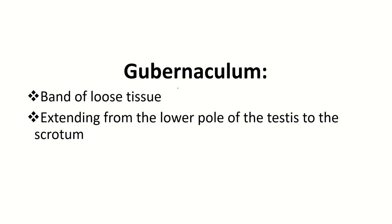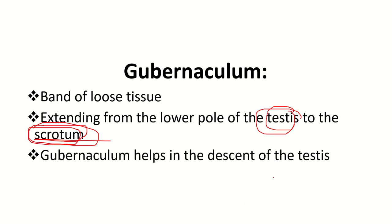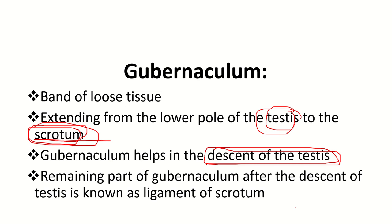The gubernaculum is a soft tissue structure that connects the lower pole of the testes to the scrotum. It is a fibrous structure connecting the lower pole of the testes to the scrotum. The gubernaculum helps in the descent of the testes to its final destination. The remaining part of the gubernaculum after descent of the testes is known as the ligament of the scrotum.